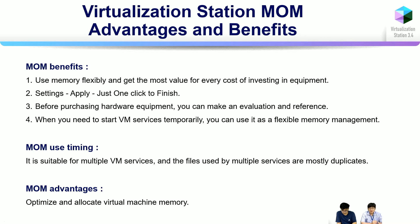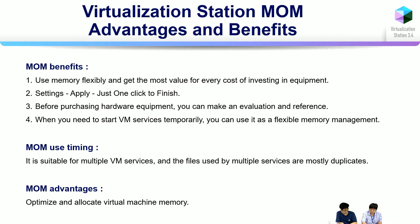The use case is suitable for multi-VM services where files used by multiple services are mostly duplicated. For example, if you clone VM1 to VM2, the cloned VM2 can share the same files and therefore share the same memory. The MOM advantage is optimized and allocated virtual machine memory. Enable it and you can see that memory drops from 92% down to 34%. Memory usage will gradually decrease — just one click and it's finished.